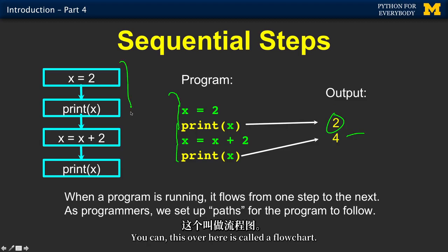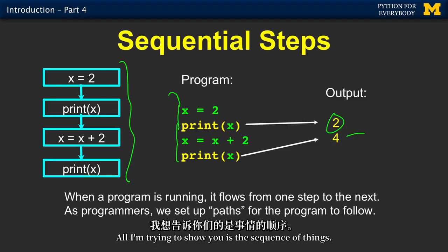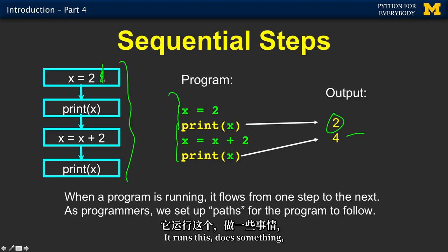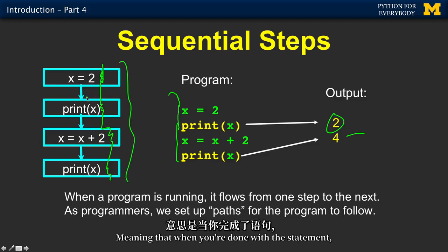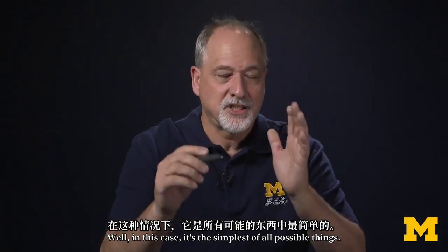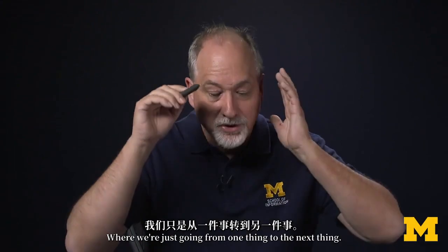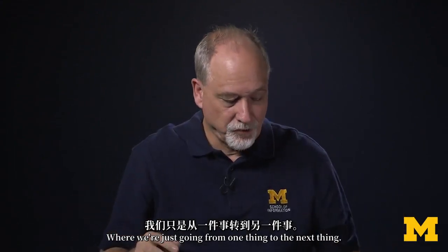This over here is called a flowchart. I don't really make you write flowcharts. I'm not sure that's all that valuable. All I'm trying to show you is the sequence of things. It runs this, does something, then moves on to the next one, does this, then moves on to the next one. Meaning when you're done with a statement, where are you going to go? In this case, it's the simplest of all possible things, where we're just going from one thing to the next thing.